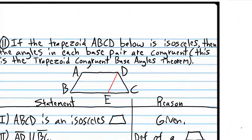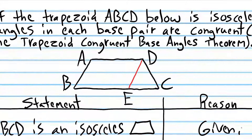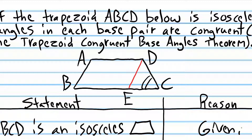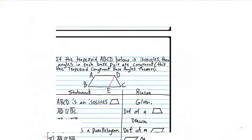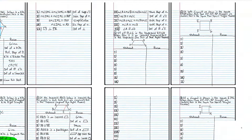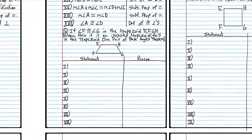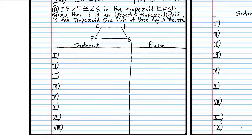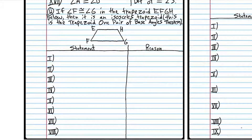We proved the obtuse angles are congruent. First we proved the acute angles were congruent, then we proved the obtuse angles are congruent. That was a long problem. The last problem today is similar but easier — I'm going to have you do it on your own.